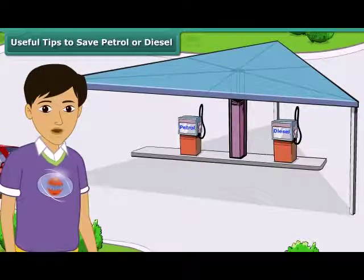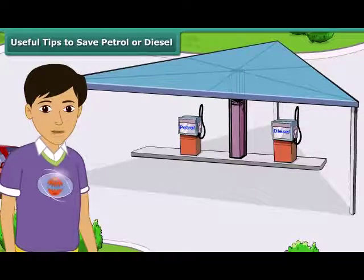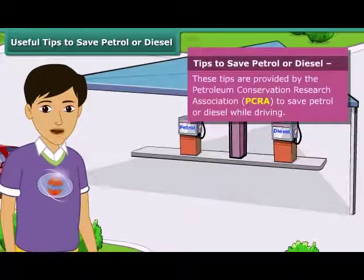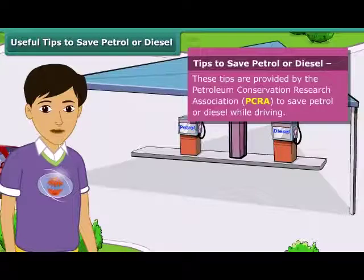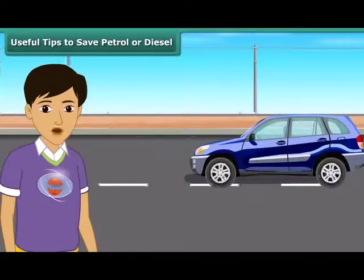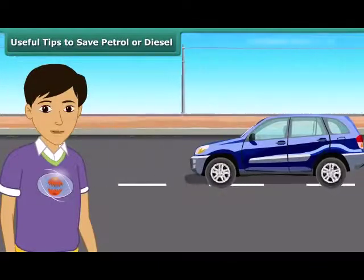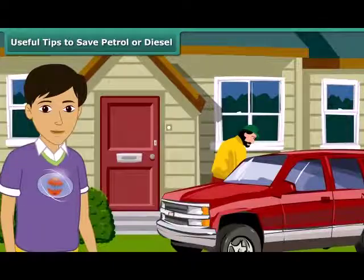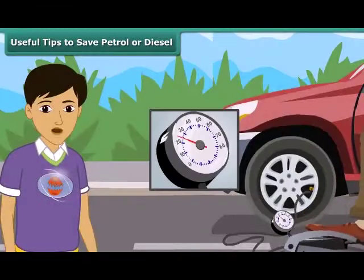As we know that petrol and diesel are exhaustible resources — the amount of them in nature is limited and will deplete one day. It is important to use these resources carefully. Here are a few useful tips as advised by the Petroleum Conservation Research Association (PCRA): one, switch off the engine at traffic lights or traffic jams; two, drive at a constant and moderate speed as far as possible; three, ensure regular maintenance of the vehicle and correct air pressure in tires.